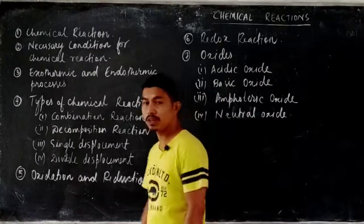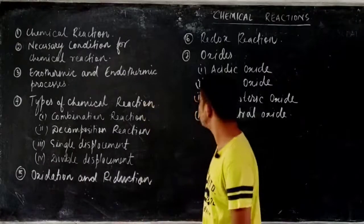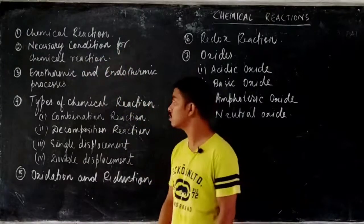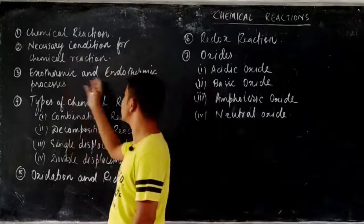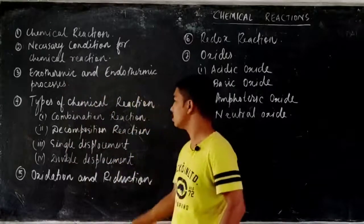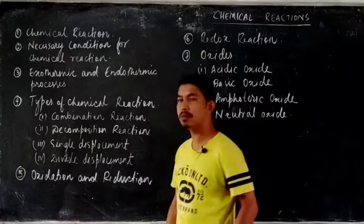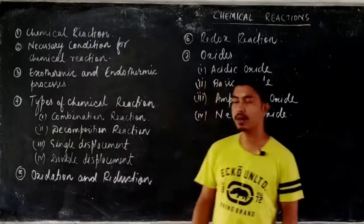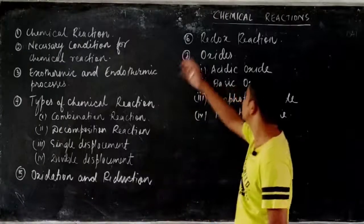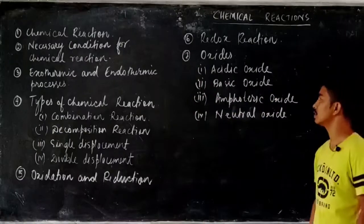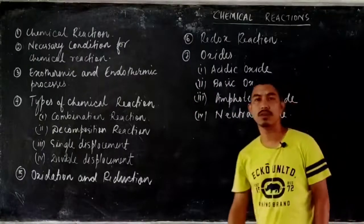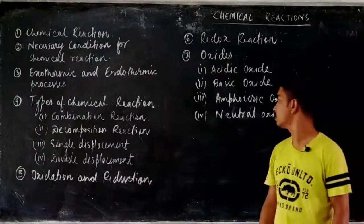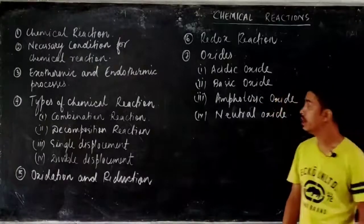In this chapter we will deal with: what is a chemical reaction; the necessary conditions for chemical reactions to occur; endothermic and exothermic processes; the four types of chemical reaction — combination, decomposition, single displacement, and double displacement; oxidation and reduction; redox reactions; and the four kinds of oxide — basic oxide, acidic oxide, neutral oxide, and amphoteric oxide.